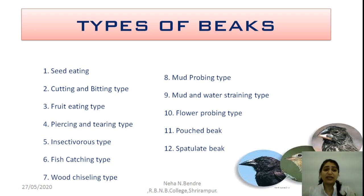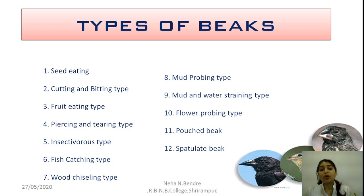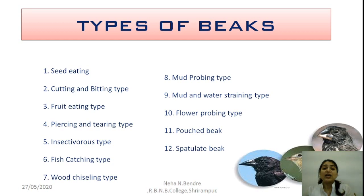According to the feeding habitat, there are different types of beaks: seed eating, cutting and biting type, fruit eating type, piercing and tearing type, insectivorous type, fish catching type, wood chiseling type, mud probing type, mud and water straining type, flower probing type, pouched beak, and spatulate beak. The names are given according to their feeding habitat.